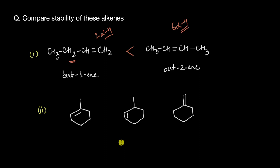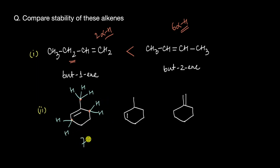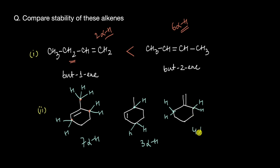For the next problem, counting the alpha hydrogens for each alkene: alkene A has three carbon atoms at the alpha position — one with three hydrogens and one with two hydrogens — giving six alpha hydrogens total. Alkene B has three alpha hydrogens, and alkene C has four alpha hydrogens. So in terms of stability, calling them A, B, and C: A is more stable than C, which is more stable than B.